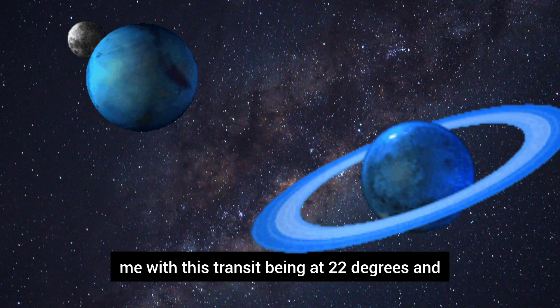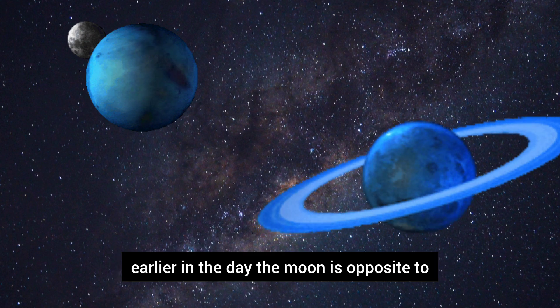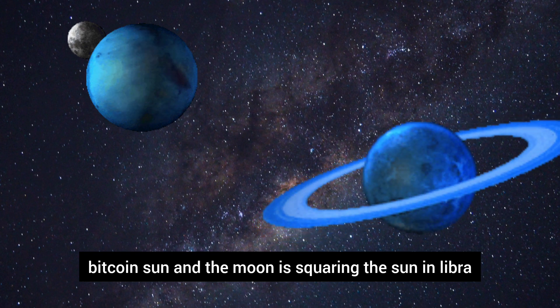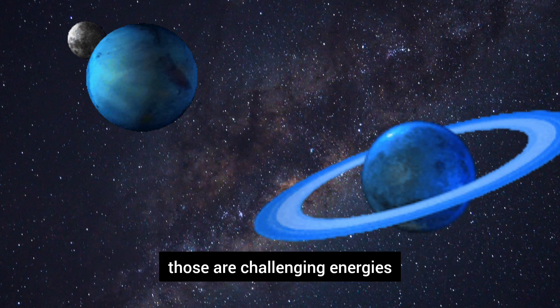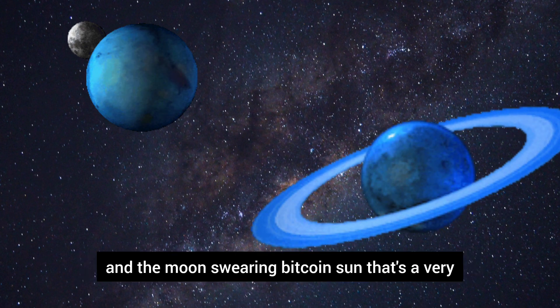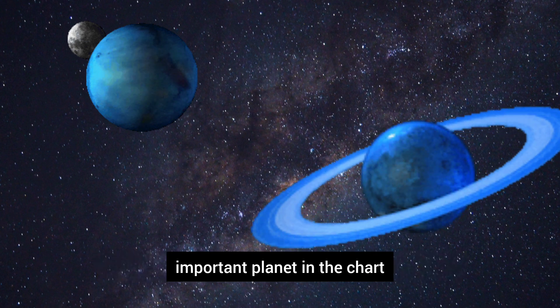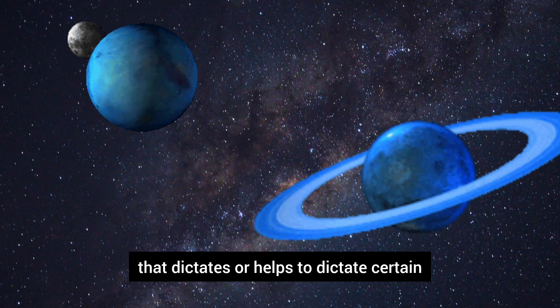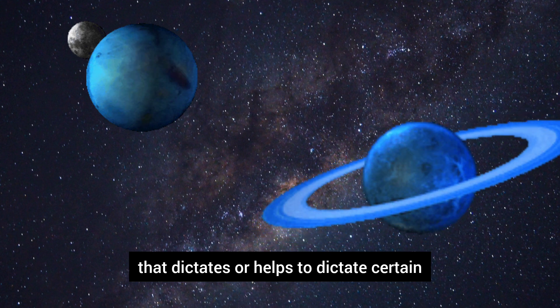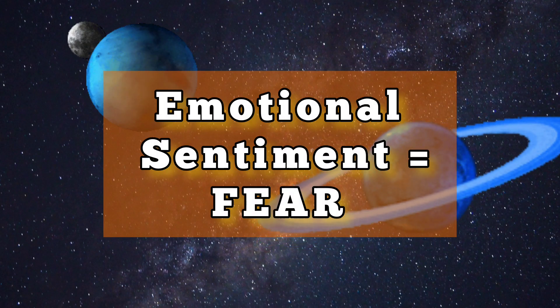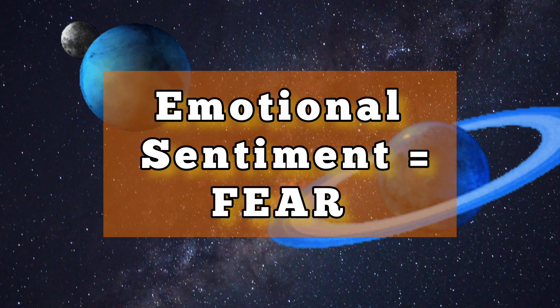With this transit being at 22 degrees and earlier in the day, the moon is opposite to Bitcoin's sun and the moon is squaring the sun in Libra. Those are challenging energies, and the moon squaring Bitcoin's sun, that's a very important planet in the chart that helps to dictate certain price movements. So I believe this is going to be a fear day. Emotional sentiment today is fear.